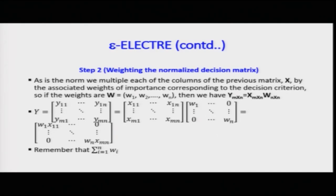We multiply each column of the normalized matrix X by the associated weights of importance corresponding to the decision criteria. If weights are given as W1 to WN, the sum of weights should be 1. Then Y equals the matrix X multiplied by weight vector W. The cell values of Y are given by X11 multiplied by W1, X12 multiplied by W2, and so on.